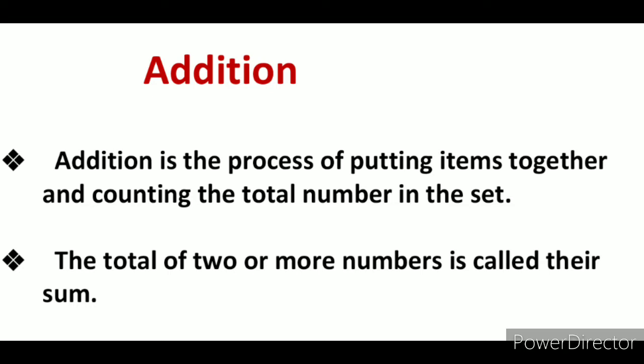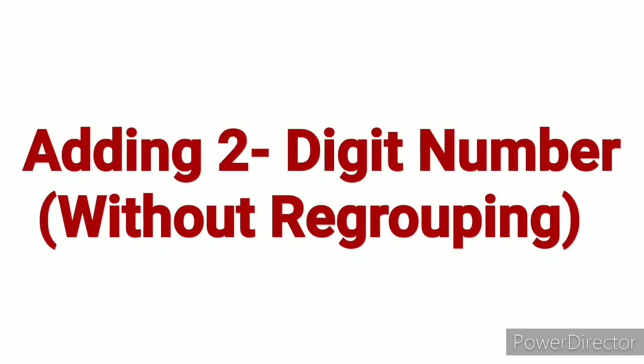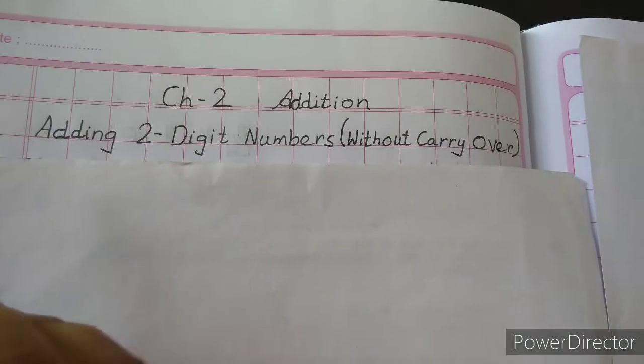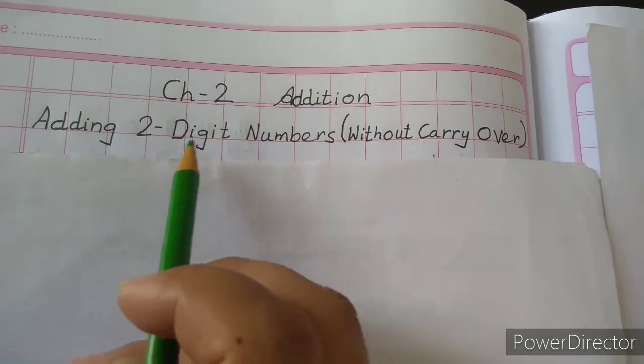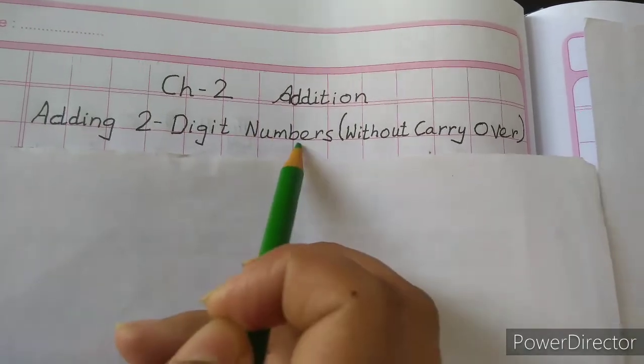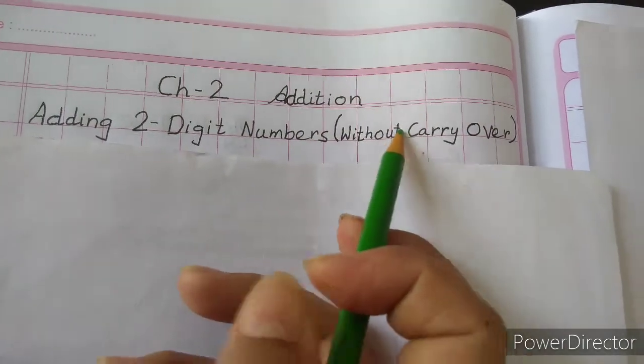The total of any 2 or more numbers is known as the sum — that is, the answer of addition is known as the sum. The topic we are going to cover today is adding 2-digit numbers without regrouping, also called adding 2-digit numbers without carryover.